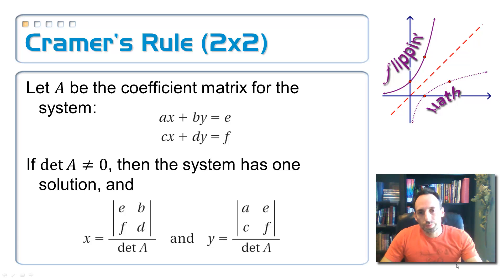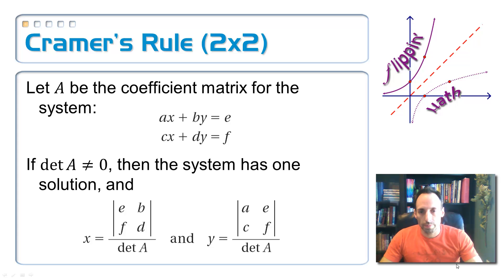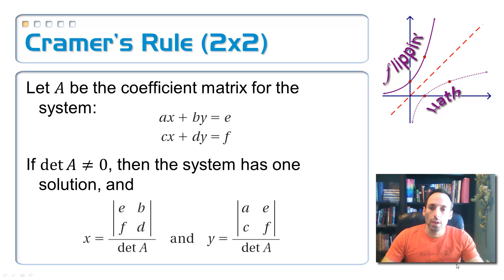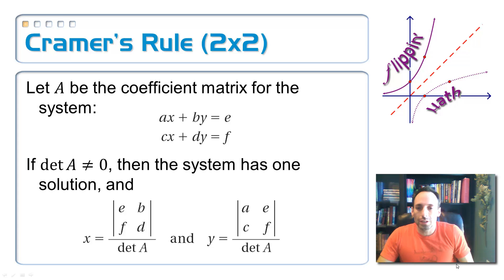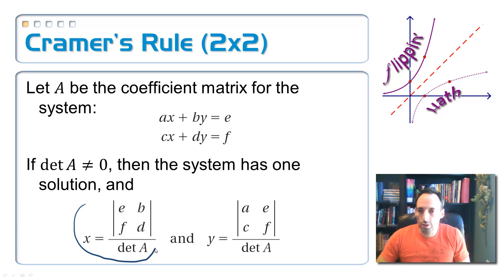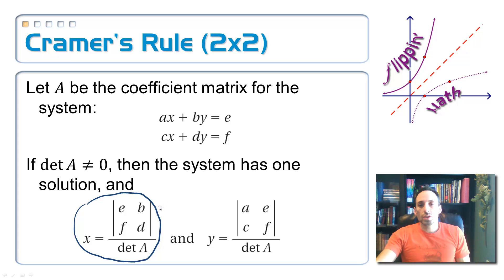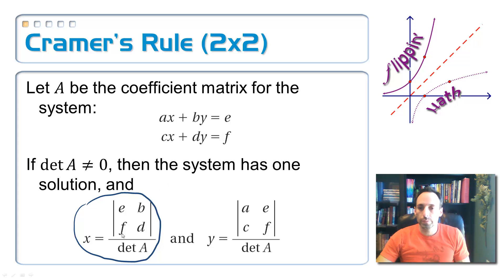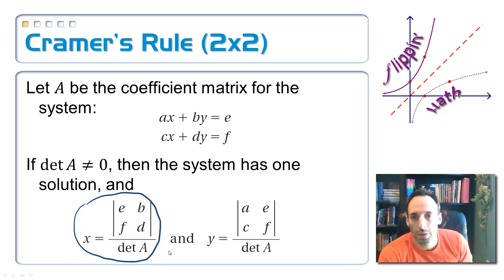Remember for Cramer's Rule, what you have to first do is find the determinant of the coefficient matrix, and that can't be zero — if it was zero, you wouldn't have a unique solution. Let's focus on the x-coordinate right here; this is the one I'm actually going to prove. To find the value of the x-coordinate, I take the values of the x-coefficient out and replace it with the constants e and f, and then find that determinant divided by the determinant of the coefficient matrix.